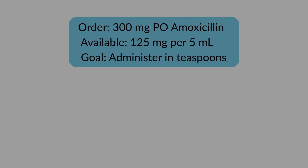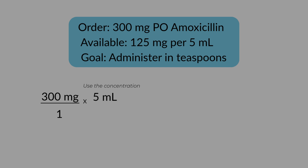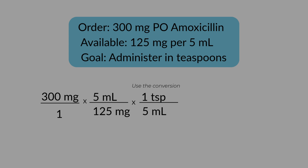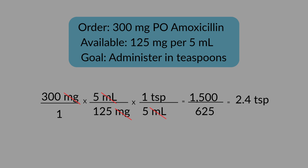Step one: start with what was ordered — 300 milligrams over one. Step two: use the concentration — five milliliters over 125 milligrams. Step three: use the conversion from milliliters to teaspoons — one teaspoon over five milliliters. Now cancel the units: milligrams and milliliters cancel, leaving teaspoons. Multiply across the top and multiply across the bottom. That gives you 1,500 over 625. Divide, and your answer is 2.4 teaspoons.